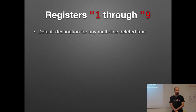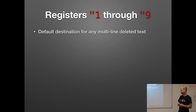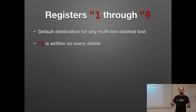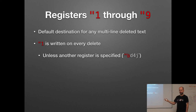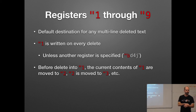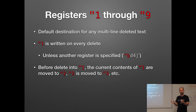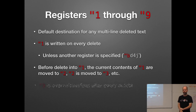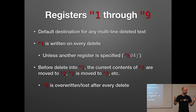Registers one through nine — you saw one earlier. This is the default location when you delete text that spans multiple lines. For instance, a DD command deletes a line plus a line ending, which qualifies. Any time you delete, it writes into register number one unless you specify an alternate location. What's cool is before putting anything into register one, VIM moves everything down: what was in register one goes into two, two goes into three, and so on until register nine, where whatever was there just goes away. This functions as a sort of history of deletions.